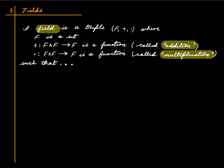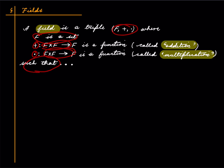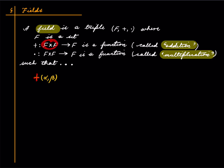So a field is a triple where F is a set, '+' is a function, and '·' is a function of this sort, such that certain properties hold. Instead of writing +(α, β) — where α and β are elements of F and +(α, β) is the image of the pair (α, β) under the addition function — we simply write α + β. Again, this '+' has nothing to do with real numbers; α and β are not necessarily real numbers. Similarly, instead of writing ·(α, β) we write α · β or simply αβ.